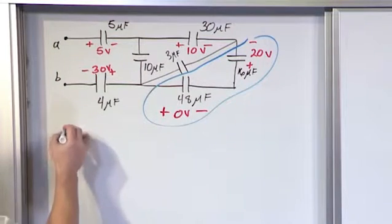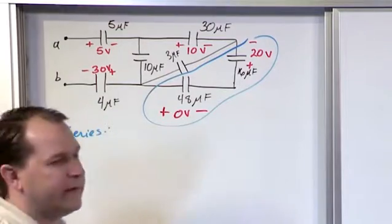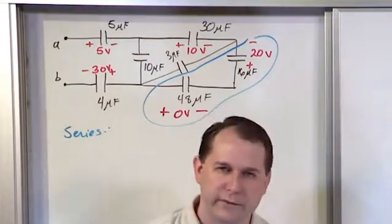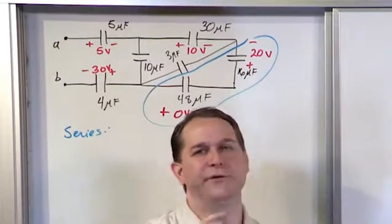So for series capacitors, it follows the rule that 1 over equivalent capacitance is equal to 1 over C1 plus 1 over C2.